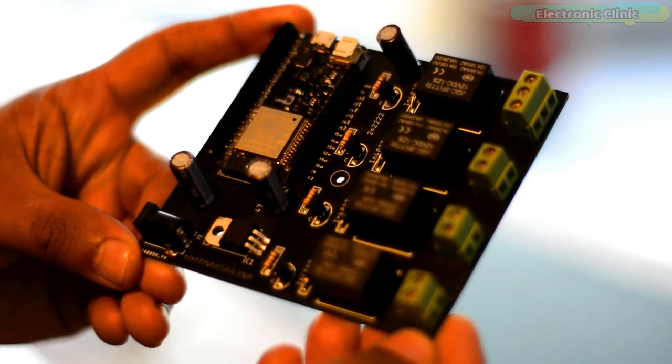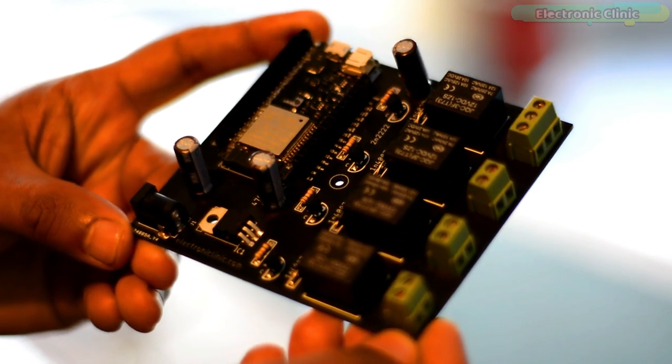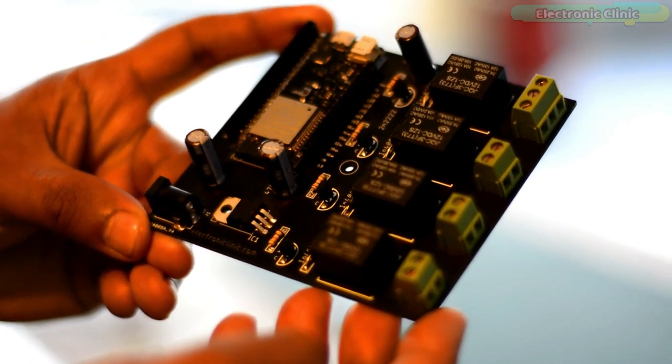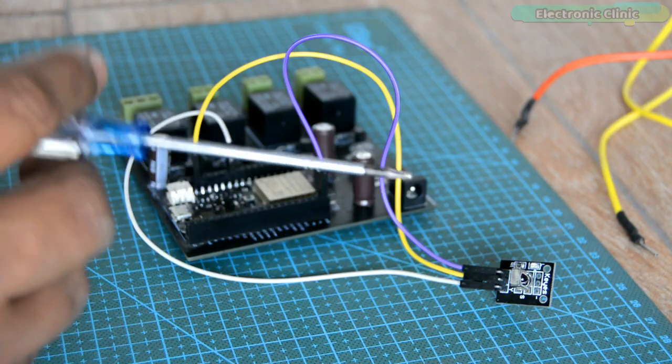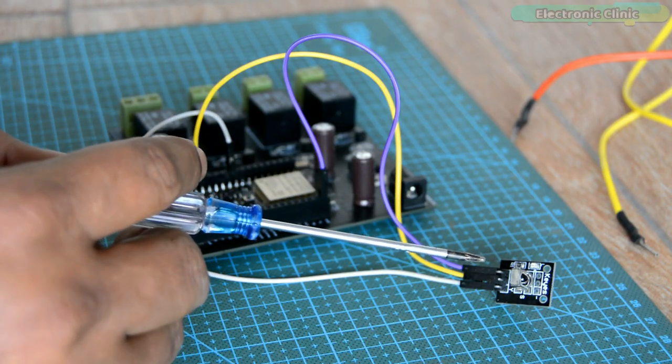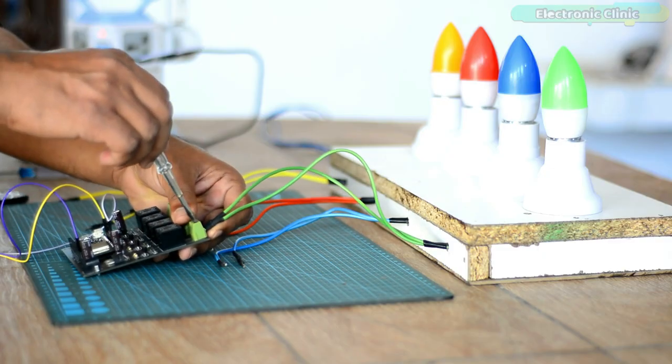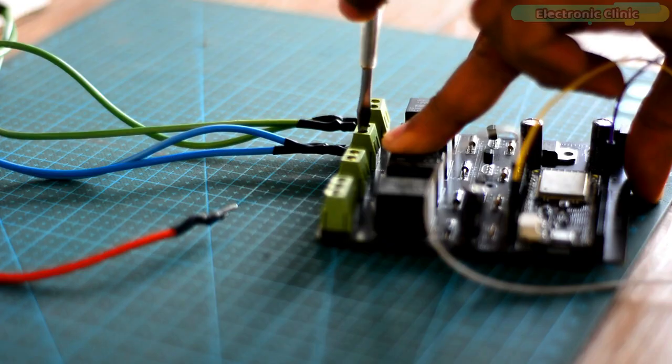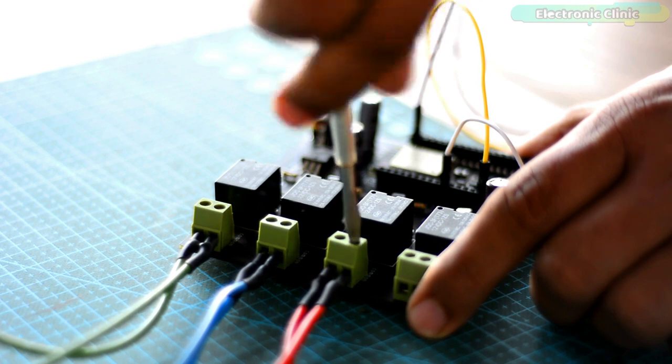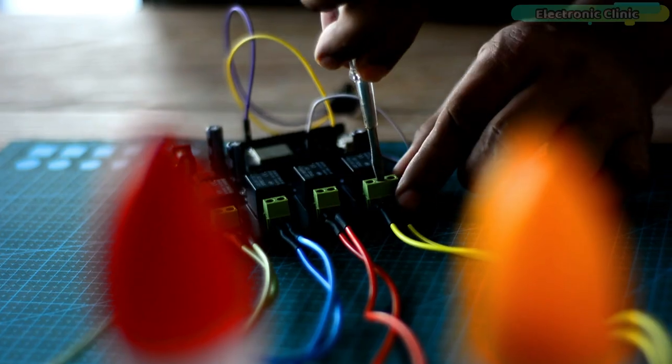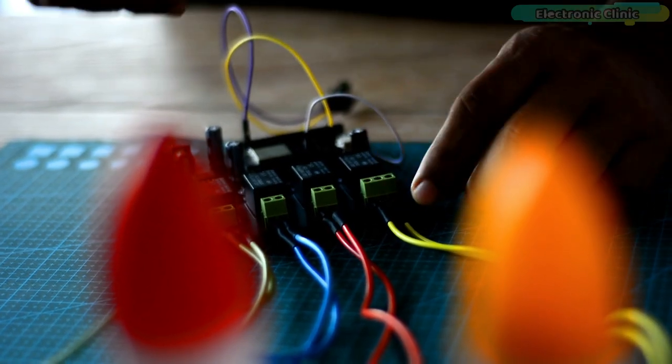Here is my ESP32 development board. If you want to make the same development board, then you can watch my previous video. I will provide a link in the description. Anyways, I connected my IR sensor and the four lights with the ESP32 development board as per the connections I just explained. Now let's take a look at the ESP32 and IR remote based home automation project programming.